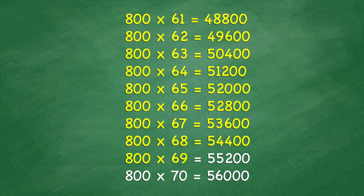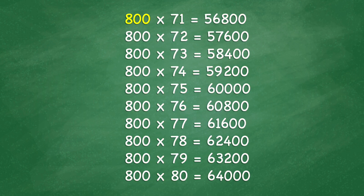800 times 69 equals 55,200. 800 times 70 equals 56,000. 800 times 71 equals 56,800. 800 times 72 equals 57,600.